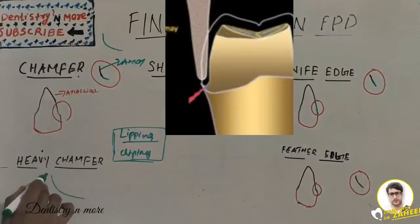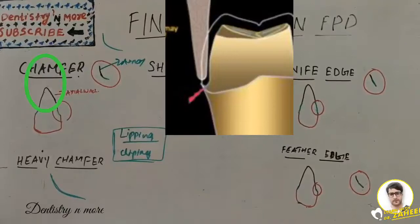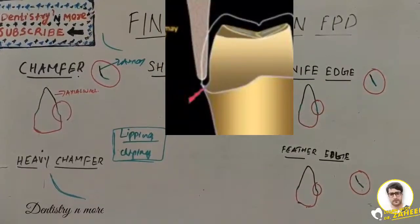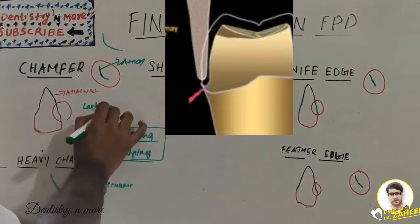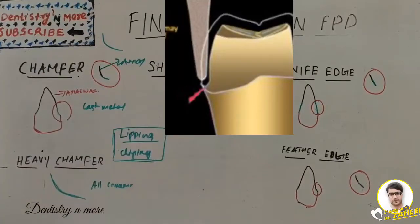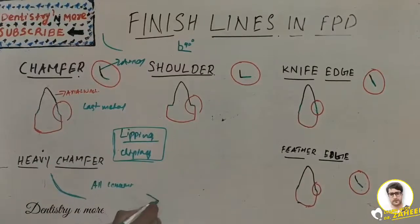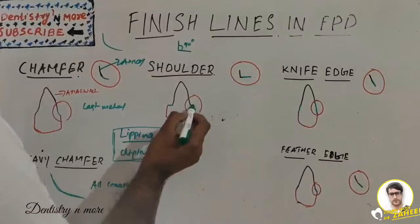Heavy chamfer changes the angulation — the cavo-surface margin becomes larger, producing a 90-degree cavo-surface angle with a large round radius. Heavy chamfer is indicated for all-ceramic crowns, whereas conventional chamfer is indicated for cast metal restorations. If desired, a bevel can be added to a chamfer when used for metal restoration — a bevel is simply placed at the end of the finish line.